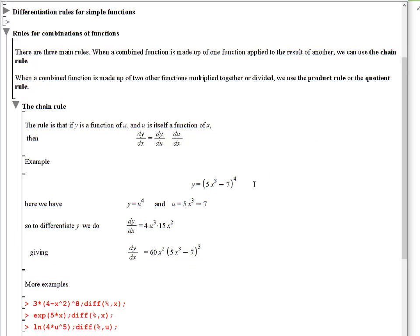So for example, if y is equal to (5x³ - 7) all to the power of 4, this is quite difficult to differentiate. But if we imagine that this part is equal to u, so u = 5x³ - 7, if we call that u, then the overall function is just y = u⁴, which is really simple. So this is simple, and this is simple. So we apply this rule here.